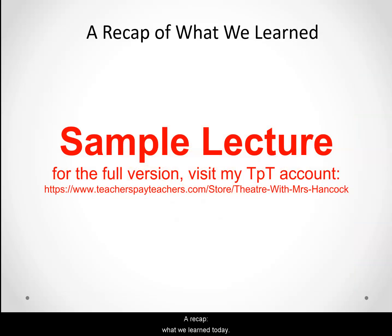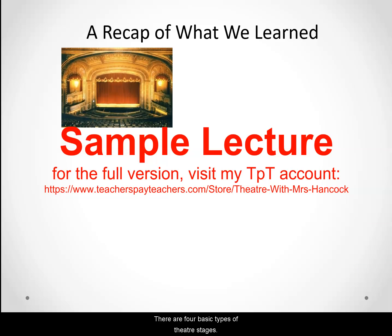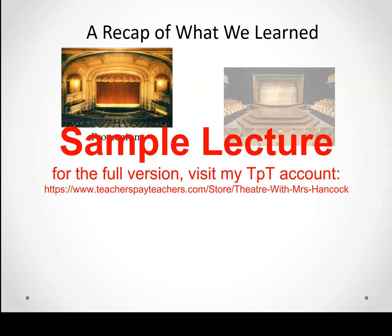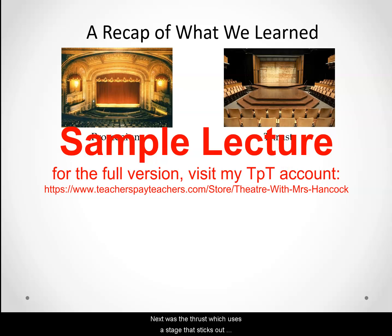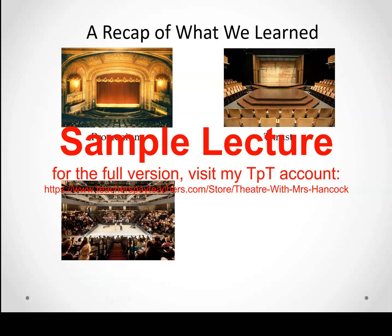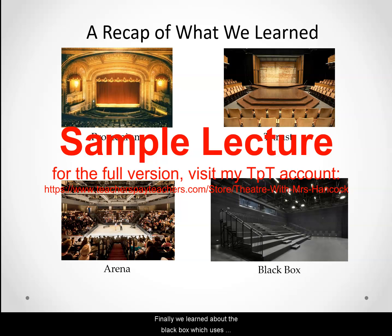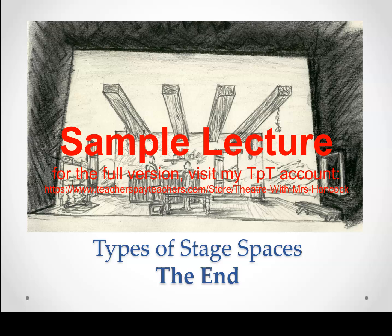A recap of what we learned today. There are four basic types of theater stages. The first is the proscenium, which comes to us from ancient Greek theater and was repopularized about 500 years ago — it uses an archway to frame the action on stage and separate the action from the audience. The next was the thrust, which uses a stage that sticks out into the audience, with the audience seated on multiple sides. Then we discussed the arena, also called in the round, which has seating on all sides. Finally, we learned about the black box, which uses movable seating to become any kind of space you can think of. This has been Types of Stage Spaces.